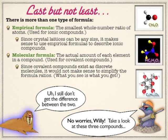On the top, that's formaldehyde. In the middle, that's acetic acid. And at the bottom, that's glucose. Now if you look at the ratio of the elements in those three compounds, all three of them have the same ratio — one carbon to two hydrogens to one oxygen.